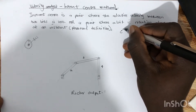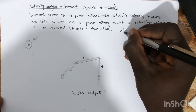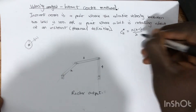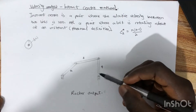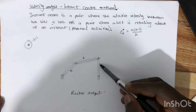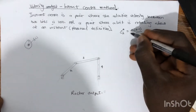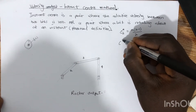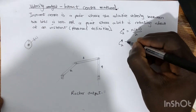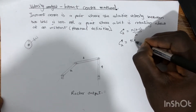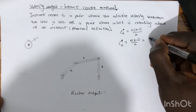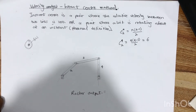The formula is the combination of n taken two at a time: C = n(n−1)/2, where n represents the number of links. Here we have link one, link two, link three, and link four — so n equals 4. The number of instant centers is 4 × (4−1) / 2, which gives us six instant centers.